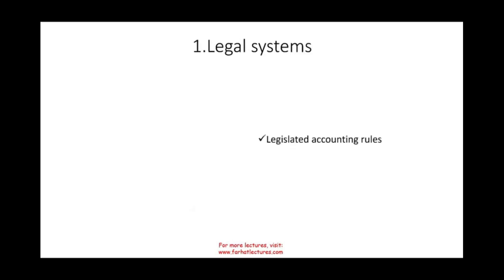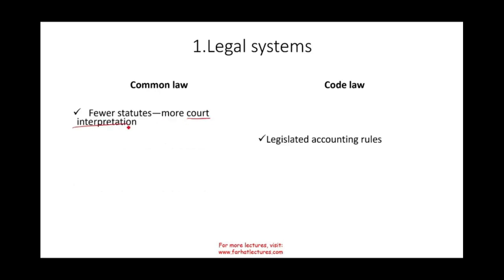The first reason is the legal system. We break down the globe into two types: common law and code law — not the only two, but the ones used mainly for the largest economies. Common law has fewer statutes; it's basically court interpretation. In the US, UK, Australia, and Canada — English-speaking countries — common law is used. The court and the judge determine the law, creating precedent or case law. Once a judge decides on a case, that case becomes the law until a new judge changes it.